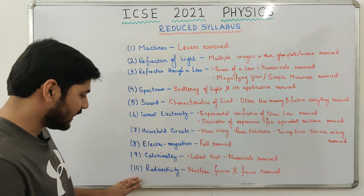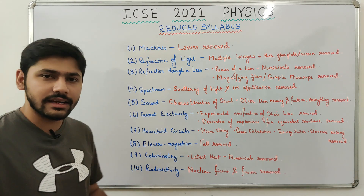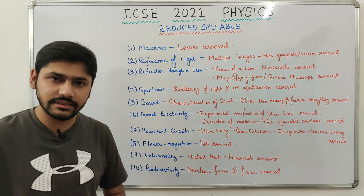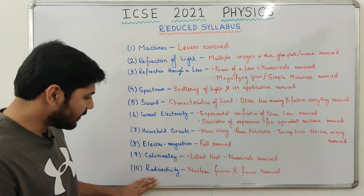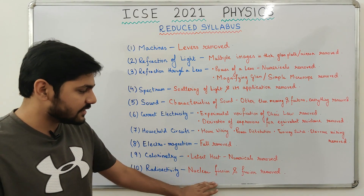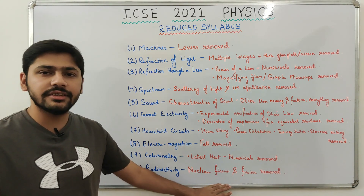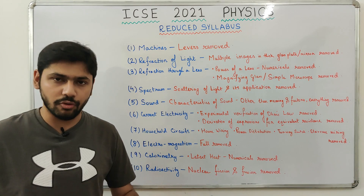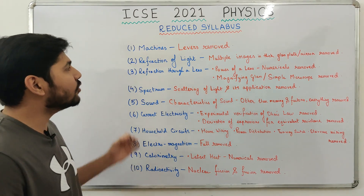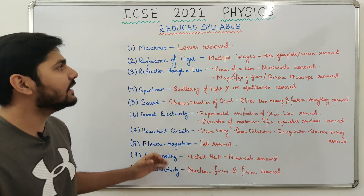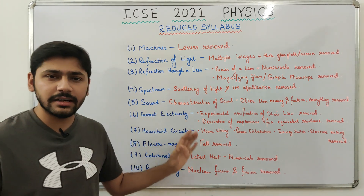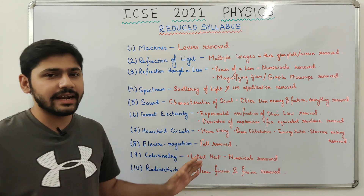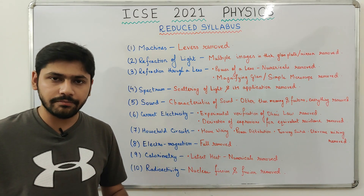Next comes radioactivity, the last chapter under modern physics. From radioactivity, nuclear fission and nuclear fusion have been removed. That was everything regarding the reduced syllabus for physics — do check it out and study accordingly.